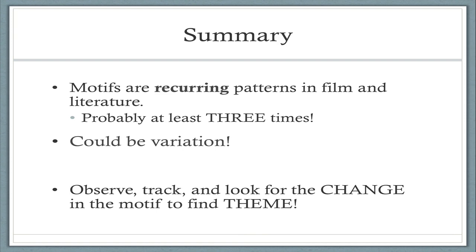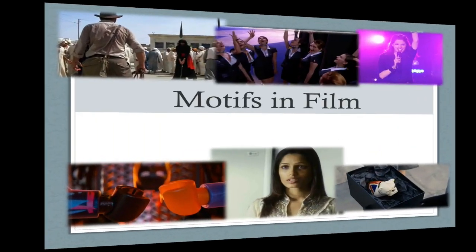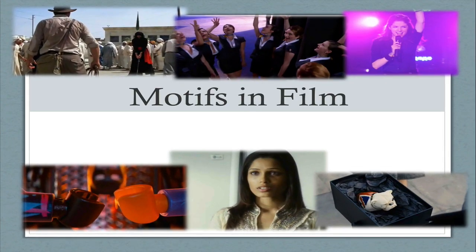There can definitely be variation in a motif — it doesn't have to be the same exact color or shape every time. The point is that an idea, a color, a piece of dialogue, or a musical sound is being repeated in a similar context over and over throughout a text. The steps are: pay attention by viewing actively, track and write down instances, look for change in that motif from beginning to end, and then apply some deep thinking about what that change reveals. Thanks so much for watching — if you have any questions on motifs in film, please go ahead and bring those in.